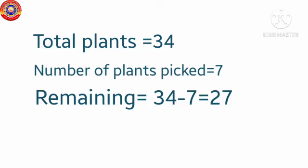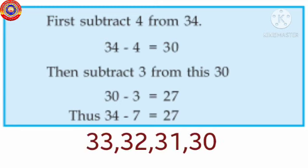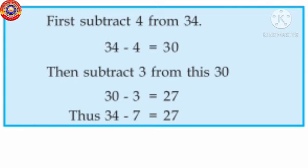Another method: first subtract 4 from 34. 34 minus 4 equals 30. Then subtract 3 from this 30: 30 minus 3 equals 27. Thus 34 minus 7 equals 27. Here we split the number 7 equals 4 plus 3.